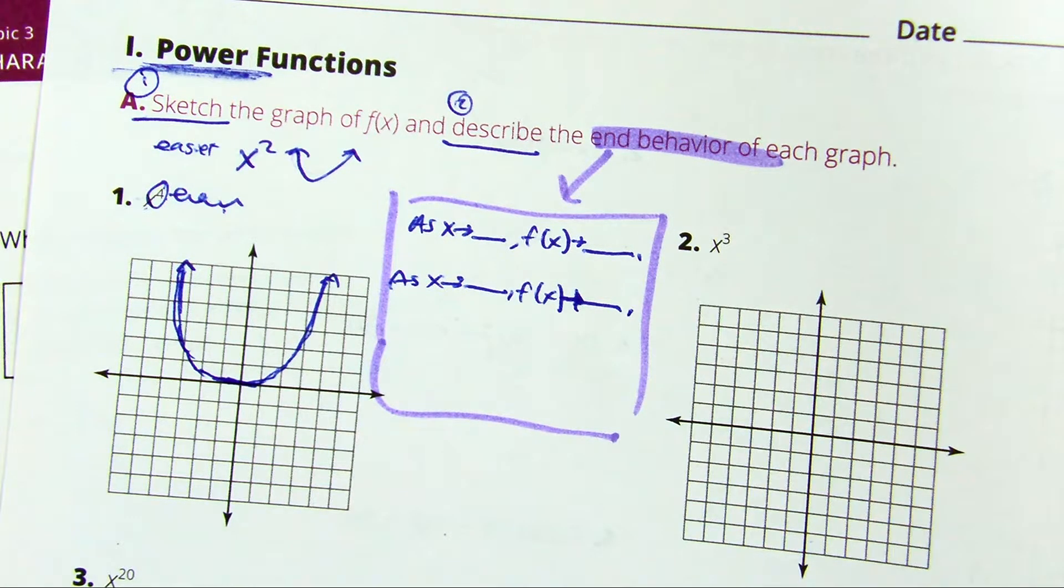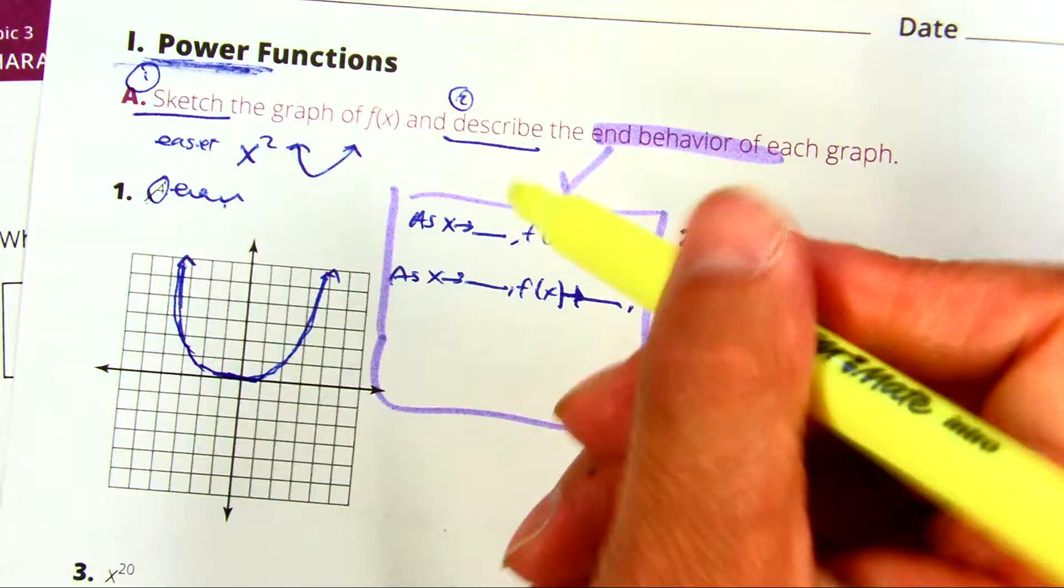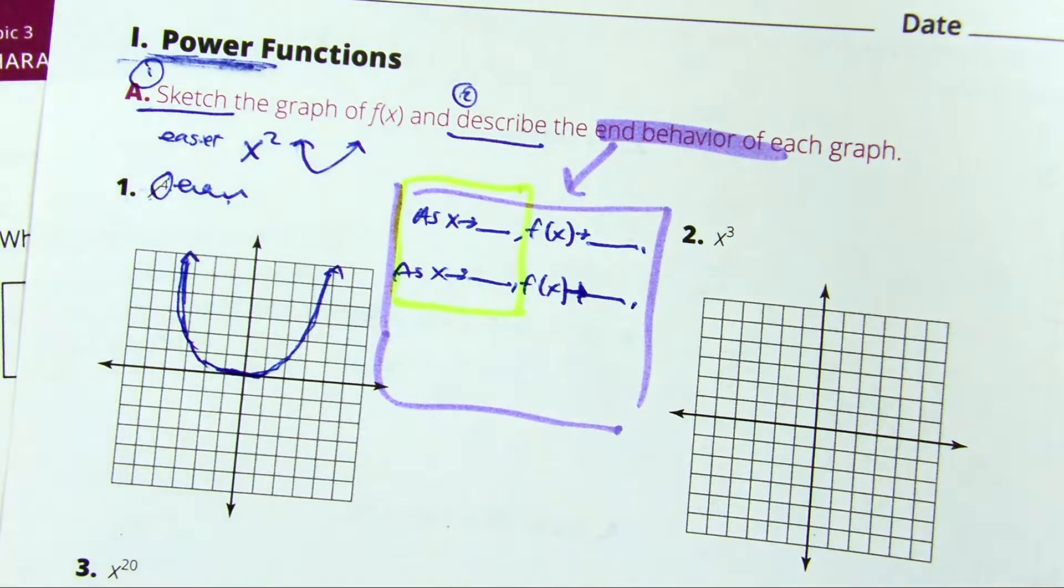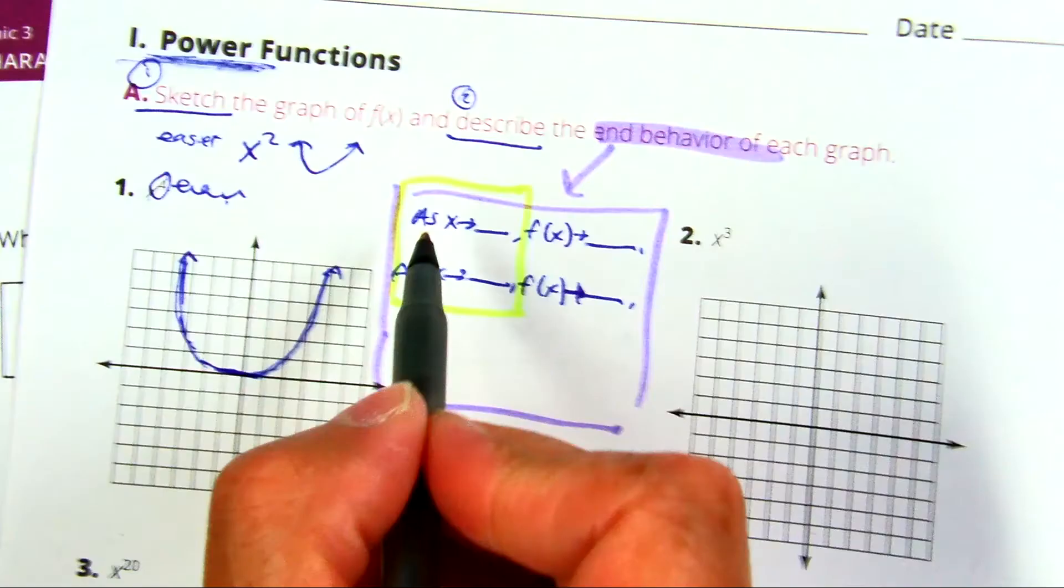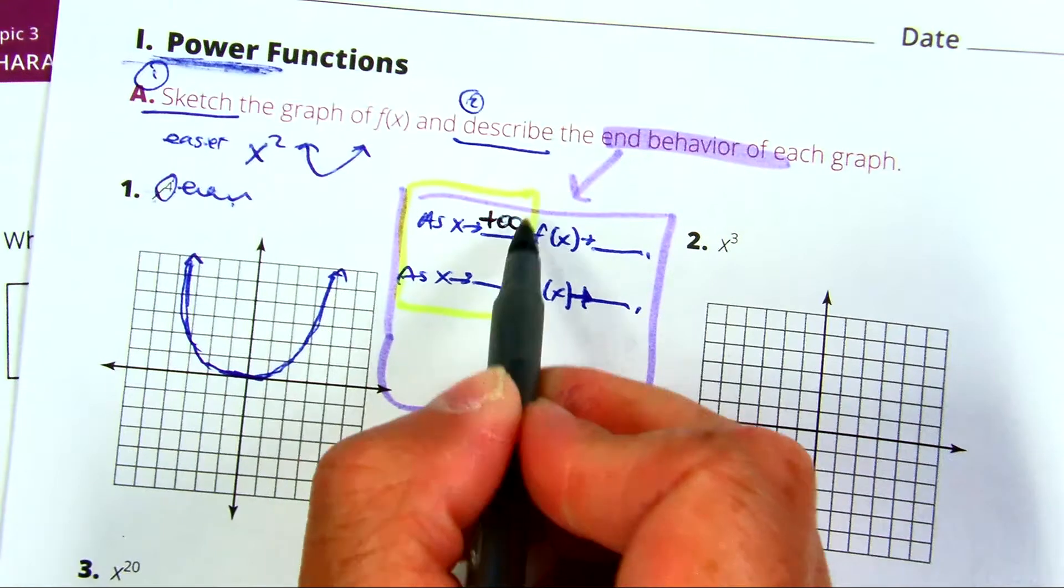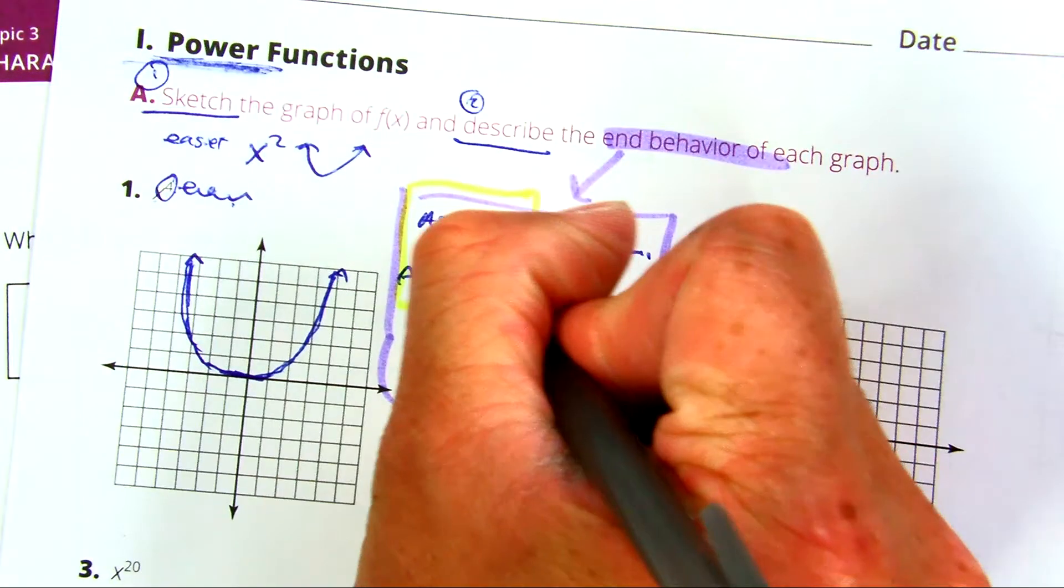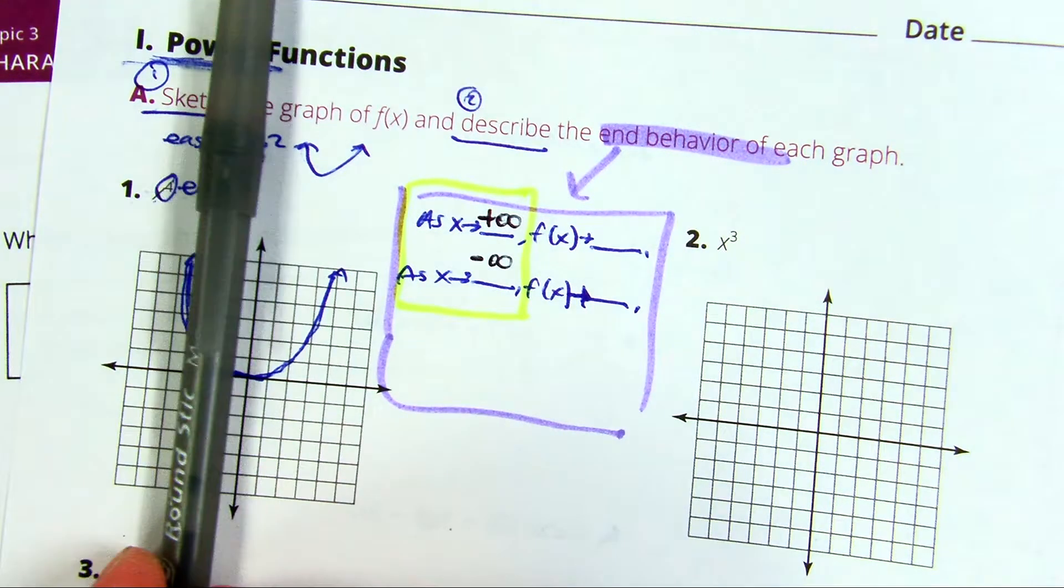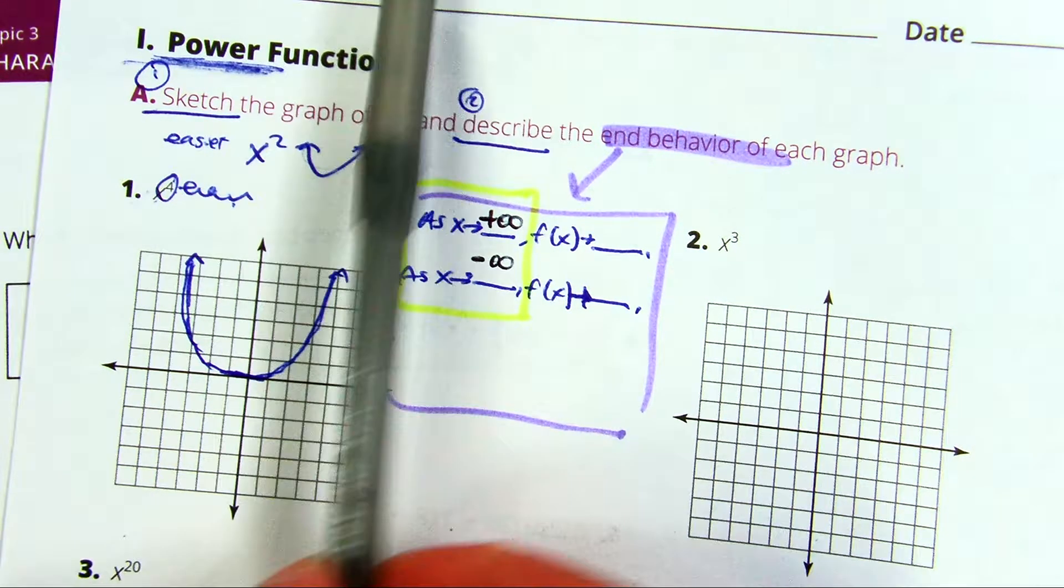Now, for my end behavior, we always put this yellow box here. As x goes to the right, positive numbers, and remember the yellow box is always the same, one positive, one negative. As you go towards the right, what happens to the graph? It goes where? Up.